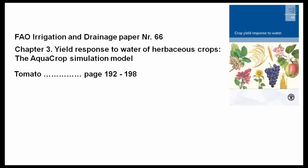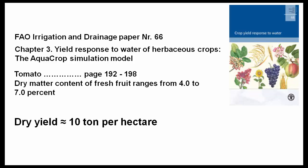For tomatoes, it is in this range of pages. And there we can find that the dry matter content of fresh fruit ranges from 4 to 7%. So, to convert the dry yield of 10 tons per hectare, I divide the 10 tons per hectare by 0.07, which is 7%, and I get 145 tons fresh tomatoes per hectare, which is indeed a very nice yield.